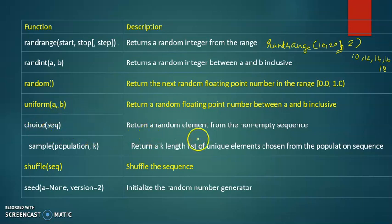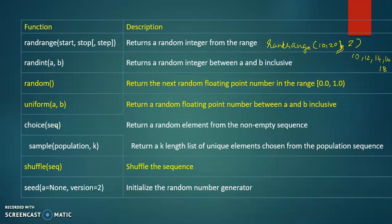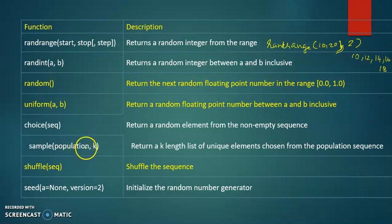The next one is choice — it returns a random element from a non-empty sequence. The sequence can be a string or a list. The sample function returns a k-length list of unique elements from a population sequence. The difference is: choice selects a single element from a sequence, while sample returns a list of values of a specified size.